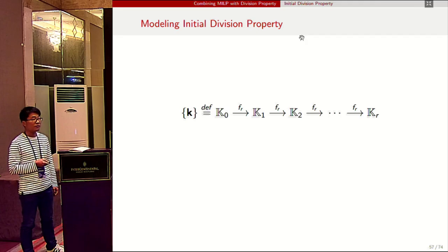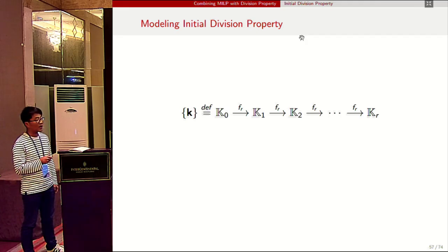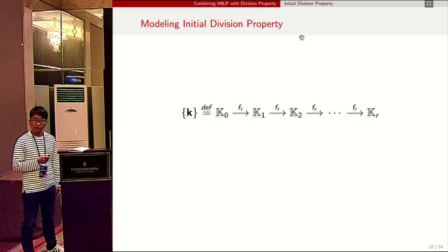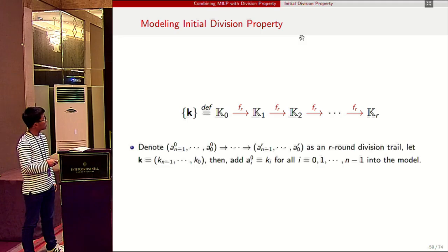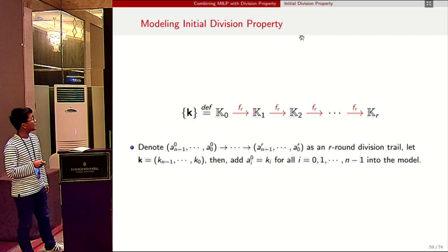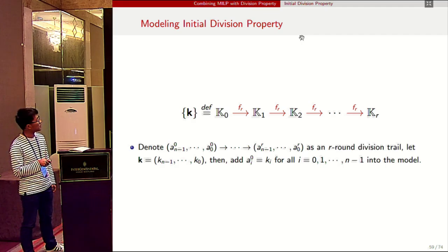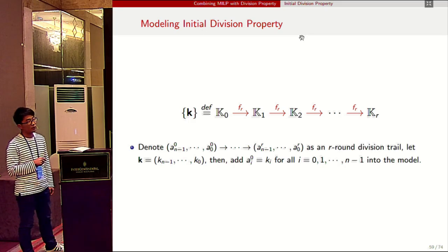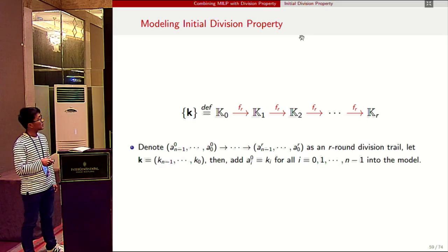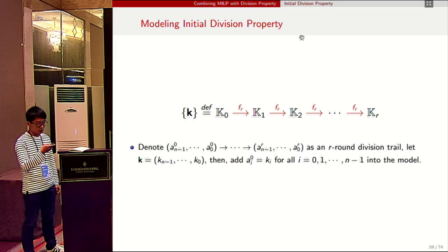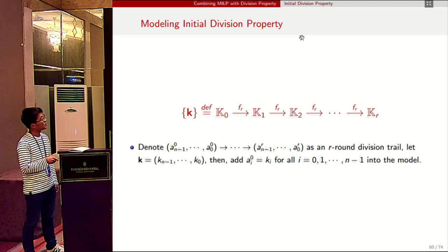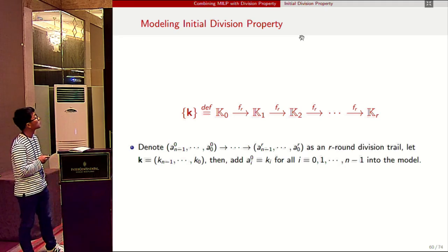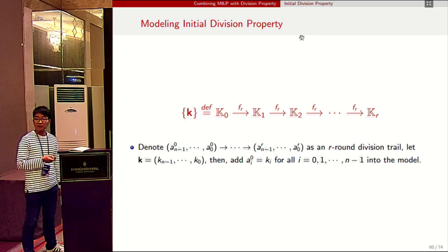For any block cipher based on copy, XOR, and S-box operations, we can construct a linear inequality system to describe the division property propagations. However, we still need to fix the input division property. For an r-round division trail with k = (k_{n-1}, ..., k_0), we add the constraint a_0^i = k_i for all i into the model. Now the input division property is included, so we know k_0, and according to the propagation rules, we know k_1, k_2, ..., k_r. This solves the first issue.